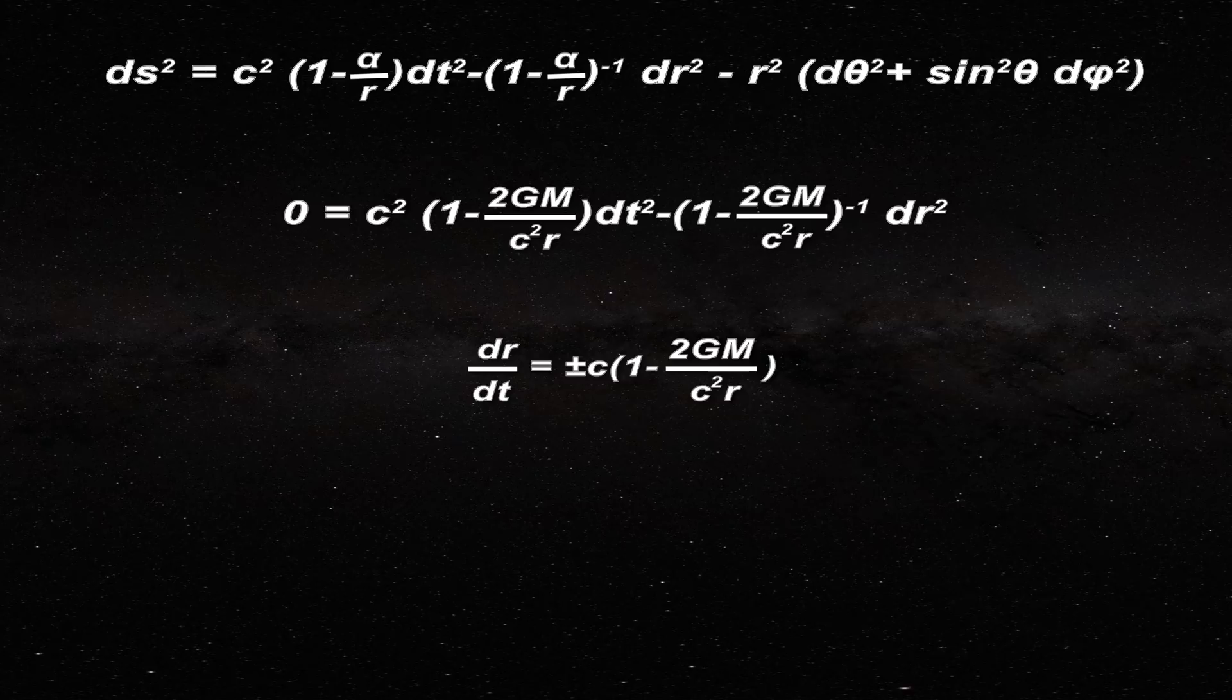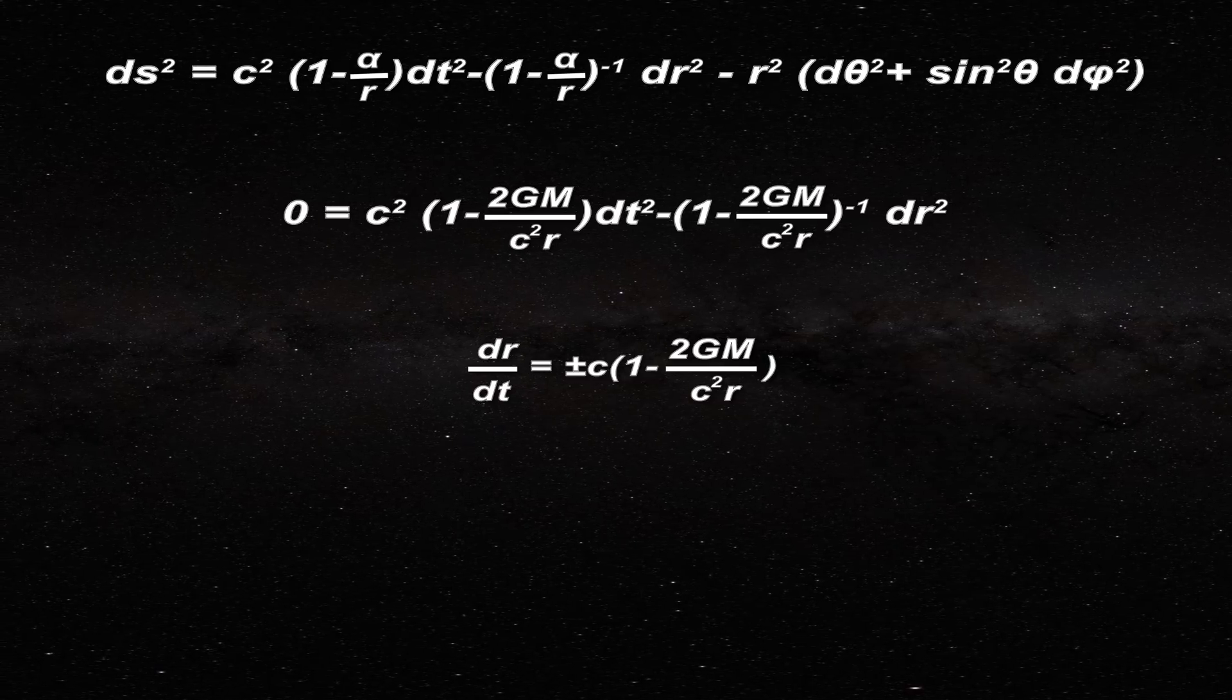For light, cosmologists set the modified Schwarzschild solution equal to zero and the value of theta to zero as well to obtain this equation. Solving for their radial velocity dr/dt, they write this equation. Then giving little r the value of the Schwarzschild radius, they obtain the escape velocity at the event horizon and hence the velocity of light there by this equation.